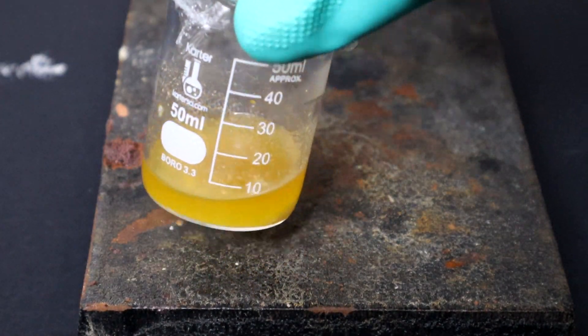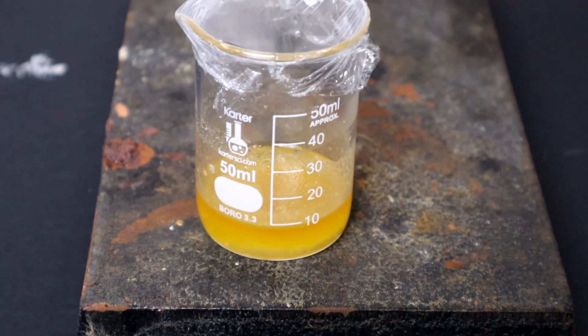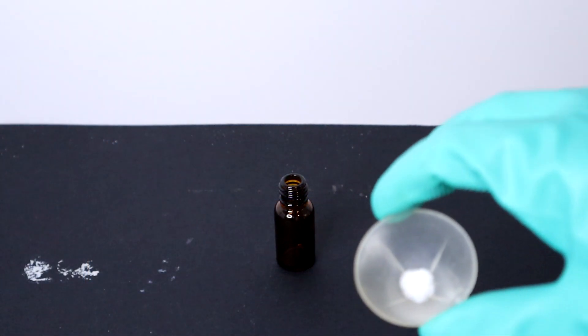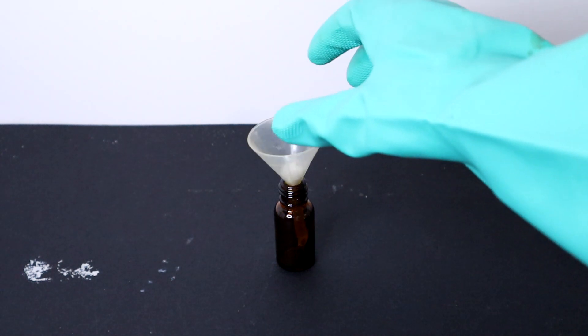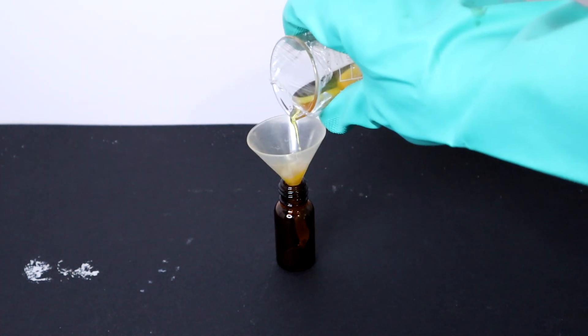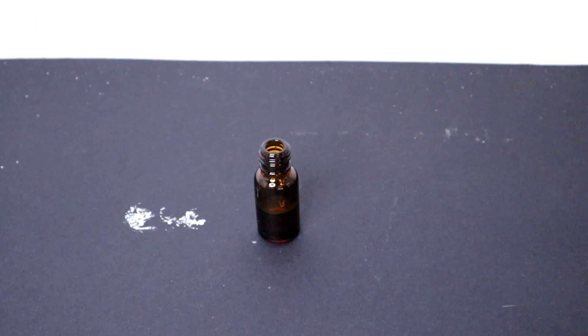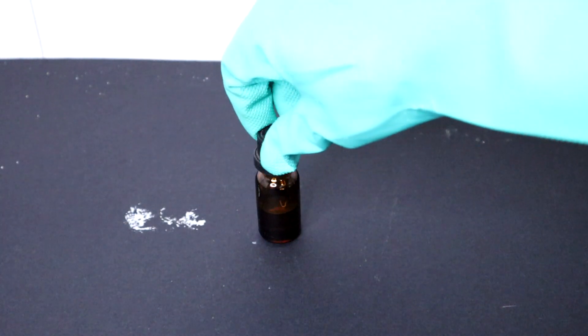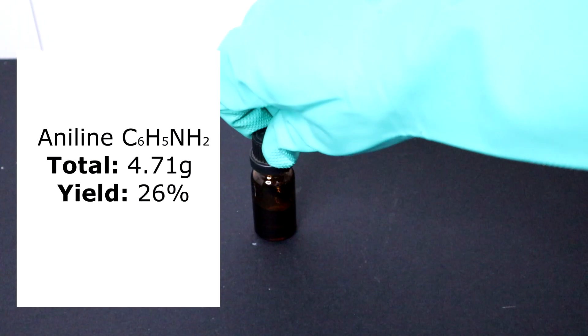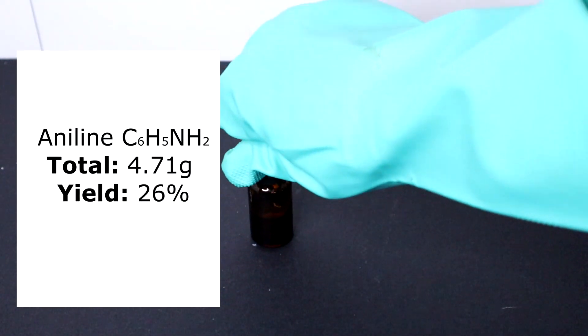After the solution turned clear, I simply filtered everything into a small pre-weighed amber glass bottle and tightened. In the end, I got 4.78g of a yellow liquid of crude aniline, which I'll be using in an upcoming video.